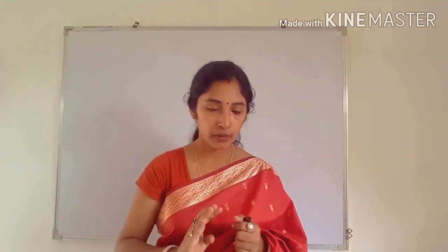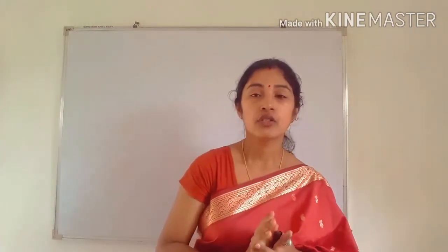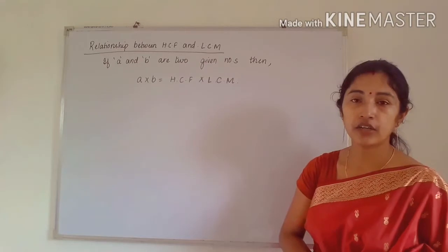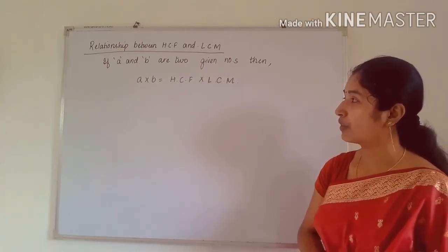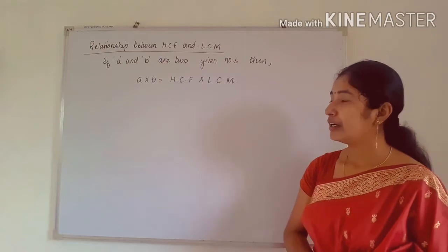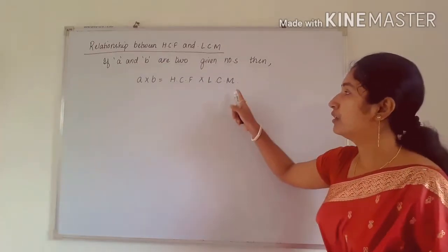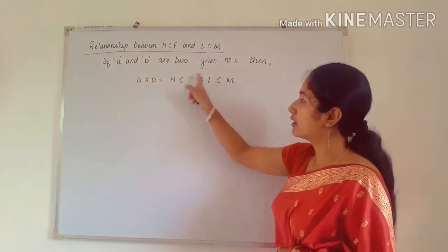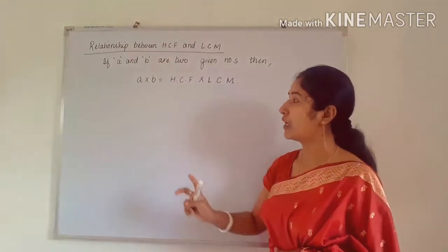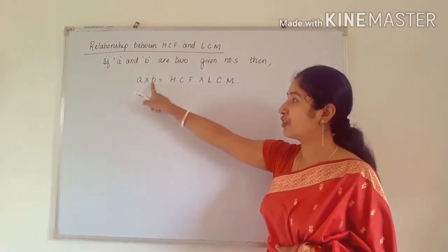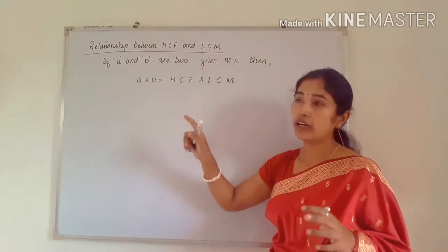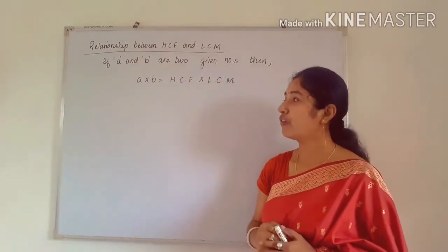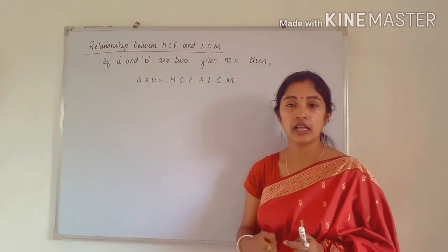I am writing the formula — you have to remember it. If A and B are two given numbers, then A × B = HCF × LCM. From this you can find any of the four quantities. I am writing all four formulas: first to find A, then B, then HCF, then LCM.